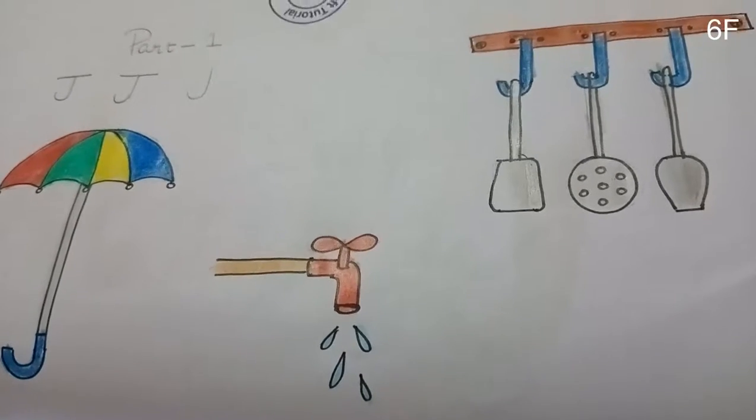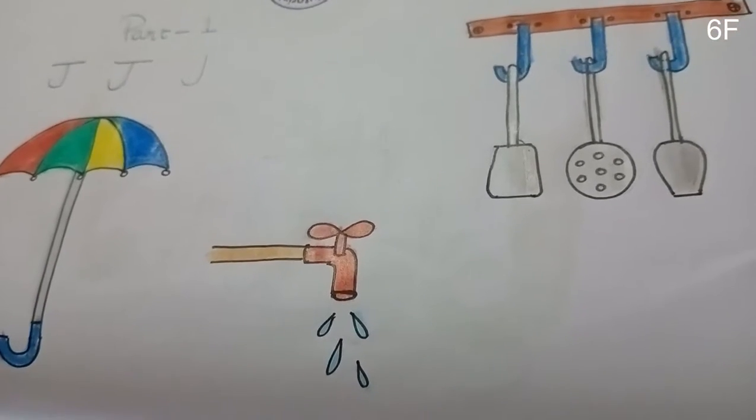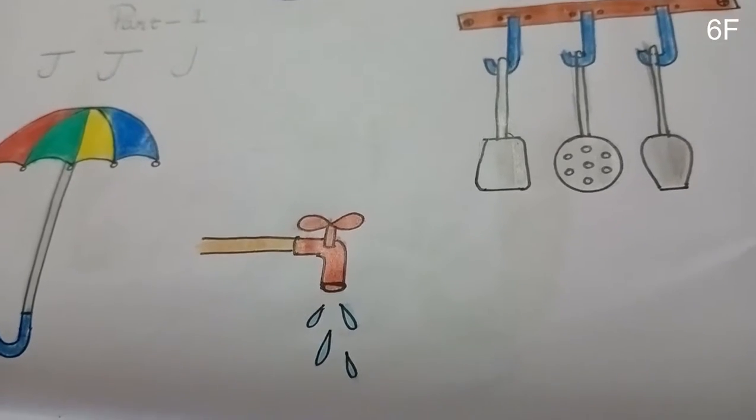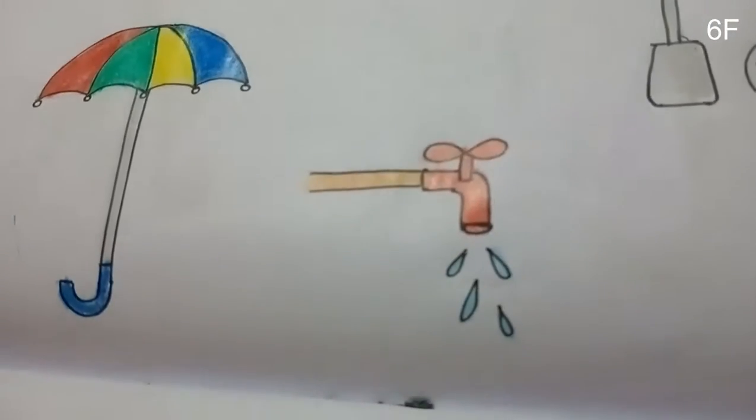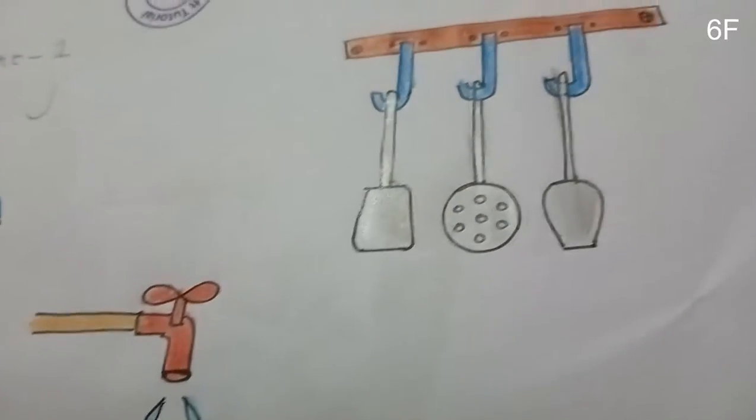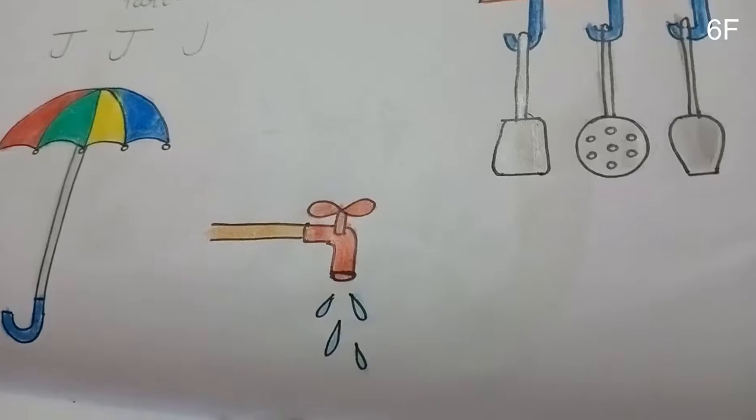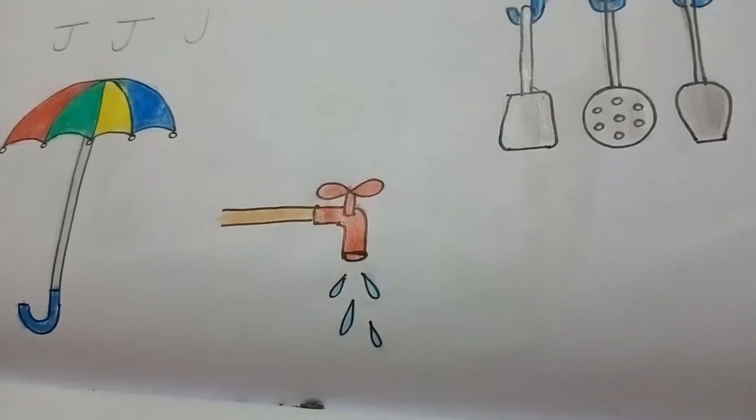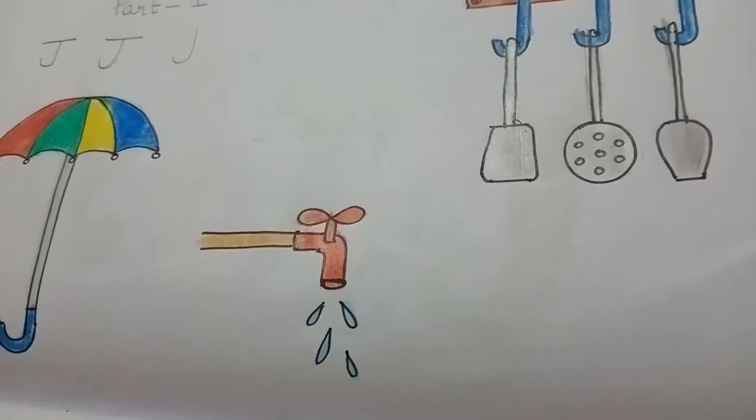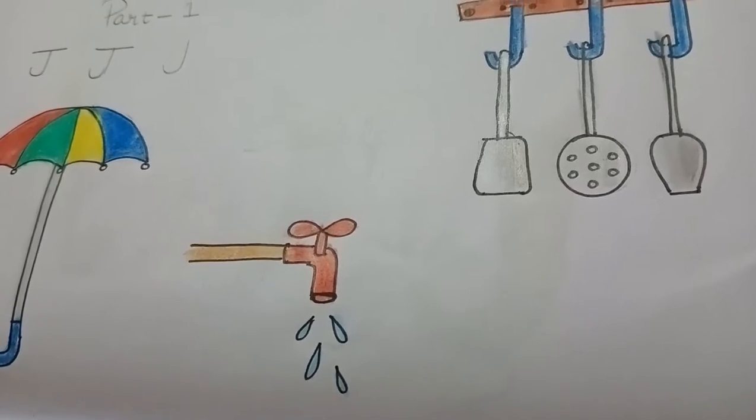This is how it looks once it's colored. Observe the letter J in each object. I just colored roughly - you can do better than this. Try this and share it with me. Thank you!